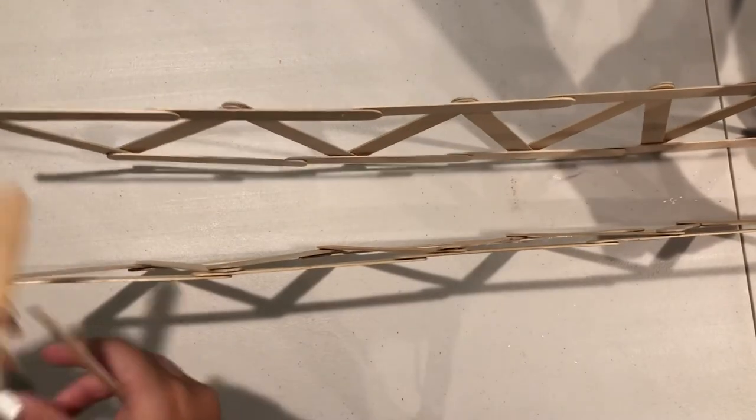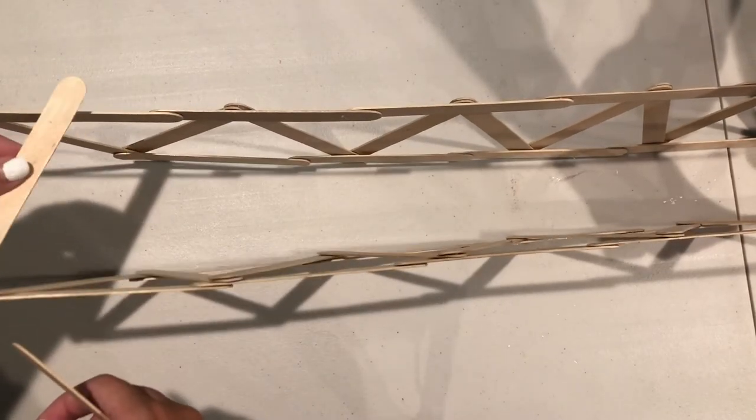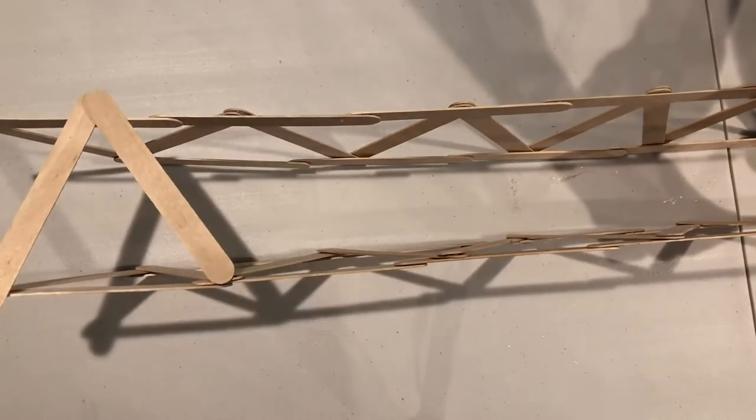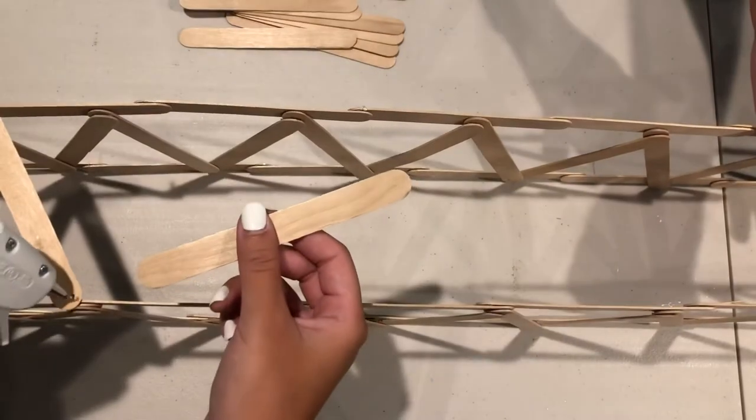Now to build the triangle supports to connect the two sidewalls, you just want to place triangles just like this all the way down. Continue gluing all the way to the end.